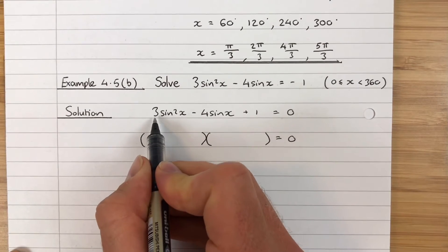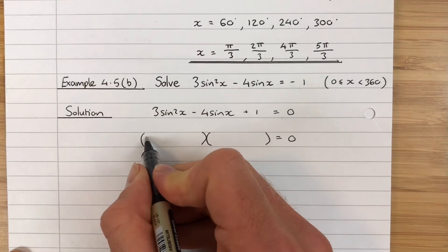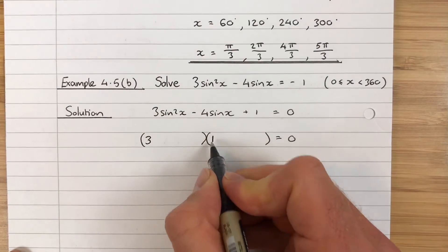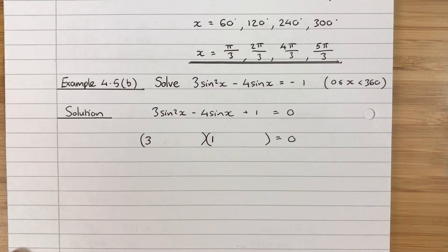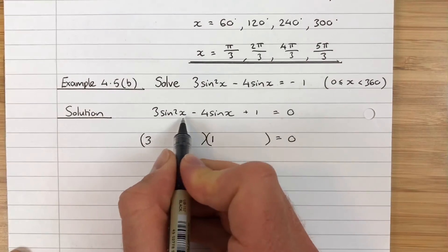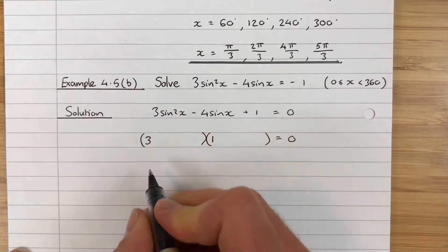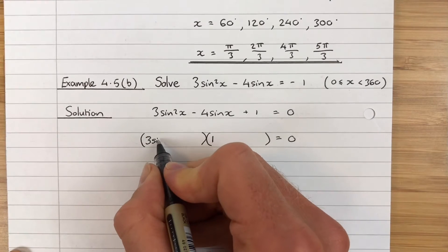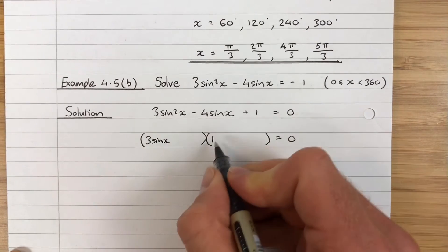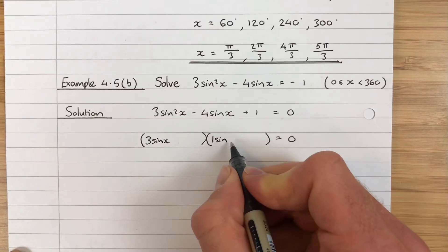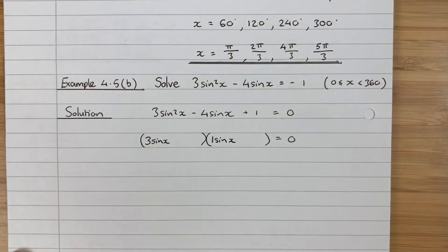To get sin²x, what does that mean? Well that means sin x times sin x. So to get that first term, we must have 3sin x times 1sin x. There's not really any debate with that.